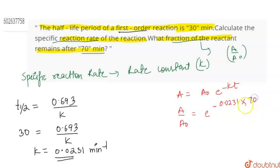And the time is 70 minutes. The minute inverse unit and the minute will cancel out. When you solve it, the ratio comes out to be 0.2.